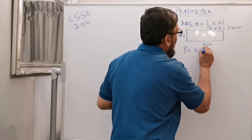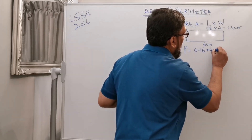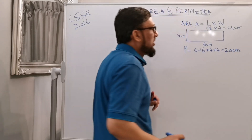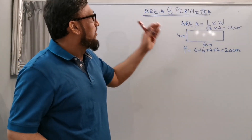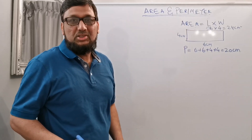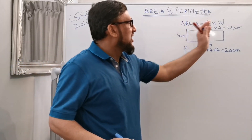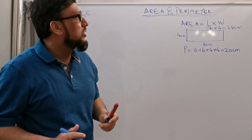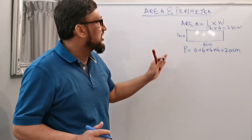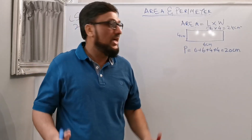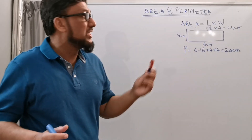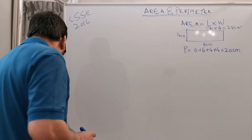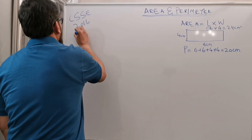Perimeter means to add all sides. So 6 plus 6 plus 4 plus 4 gives you 20 centimeters. Area is length times width giving 24 centimeters square, and perimeter you add all sides. Now we are going to move to the exam question, which is question number 7 from 2016.